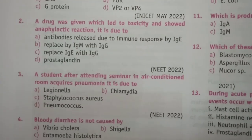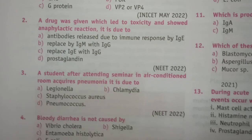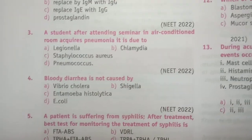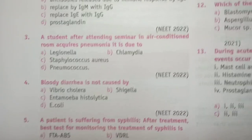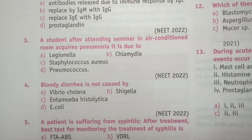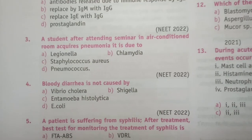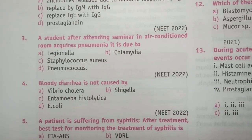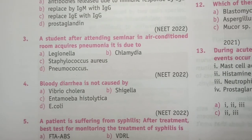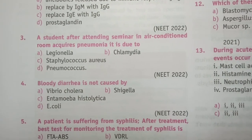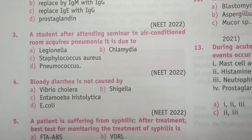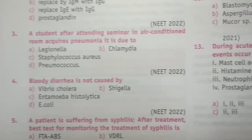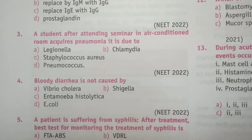These are very important questions. Question 4: Bloody diarrhea is NOT caused by Vibrio cholerae, Shigella, Entamoeba histolytica, or E. coli. The answer to question 4 is A — Vibrio cholerae. Bloody diarrhea is not caused by Vibrio cholerae.